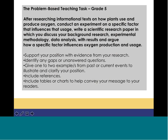After researching informational text on how plants use and produce oxygen, students conduct an experiment on a scientific factor that influences that usage, and write a scientific research paper discussing their background research, experimental methodology, data analysis with results, and argue how a specific factor influences oxygen production and usage. In every single one of our problem-based units, we had a writing task — sometimes informational, sometimes argumentative, sometimes narrative — but every single time we made sure there was a robust writing component. In this case, fifth graders were working on research and research paper writing.